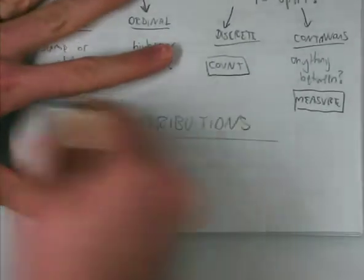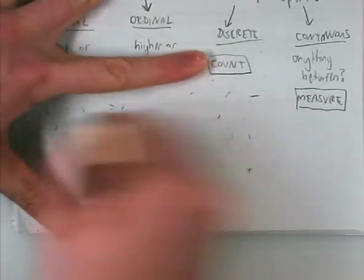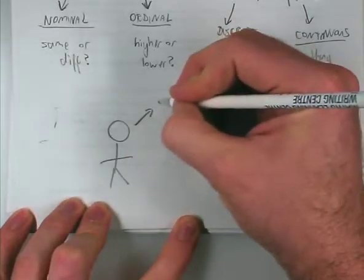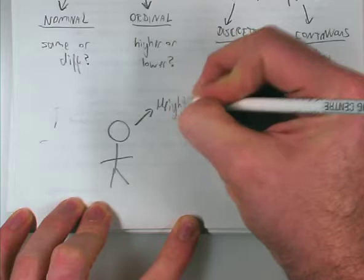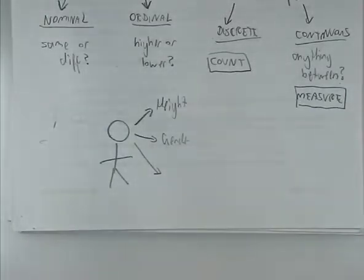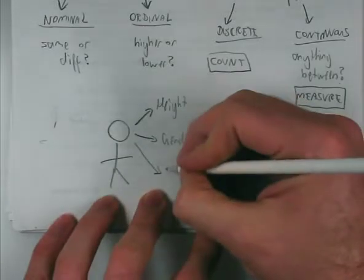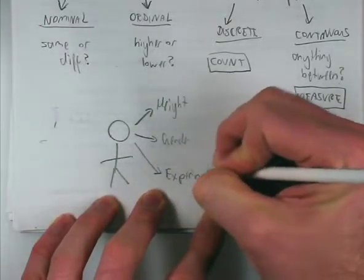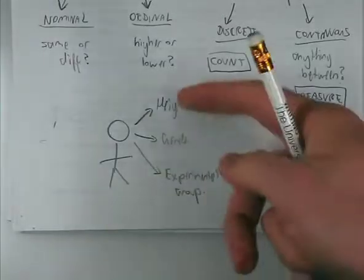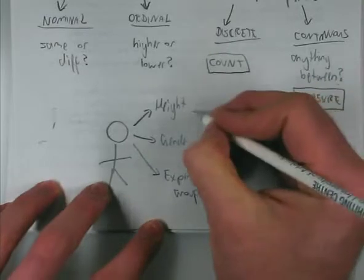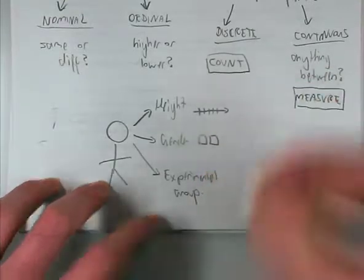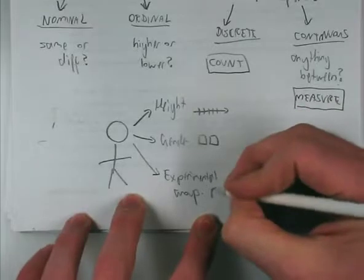You might have a person and measure their height, gender, and whether you gave them the placebo or the drug — that's their experimental group. Those are what we mean by variables. Height would be a quantitative variable, gender would be a categorical variable, and experimental group would probably be categorical too — maybe with three experimental groups.